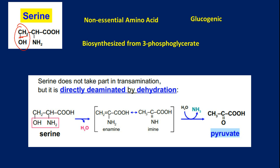The deamination of serine happens in two steps. The first step is dehydration, resulting in an enamine. The keto-enol tautomerism will generate this enamine, which can then be hydrolyzed, releasing ammonia and generating pyruvate. In this way, serine can be directly deaminated with facilitation from the dehydration reaction.